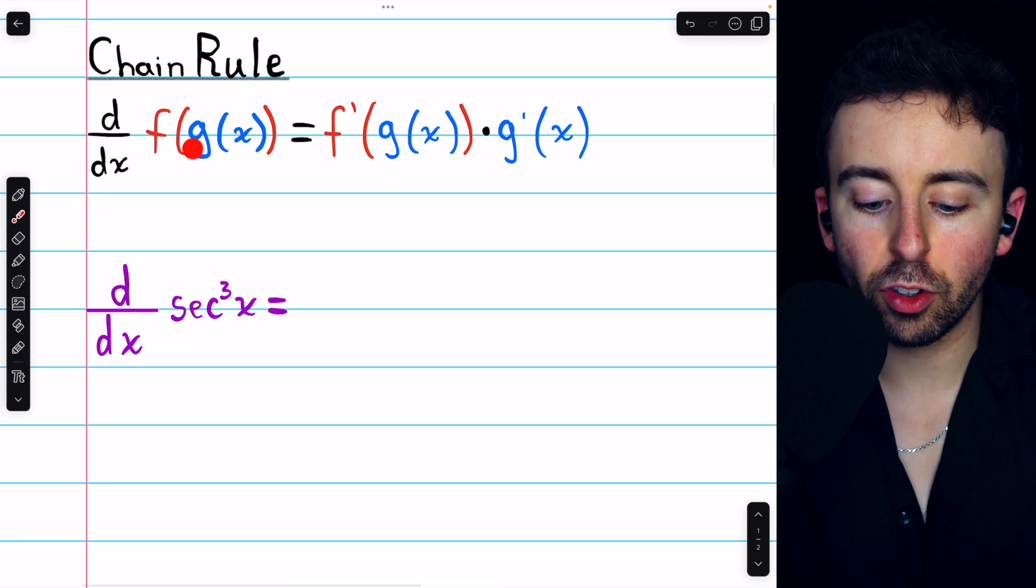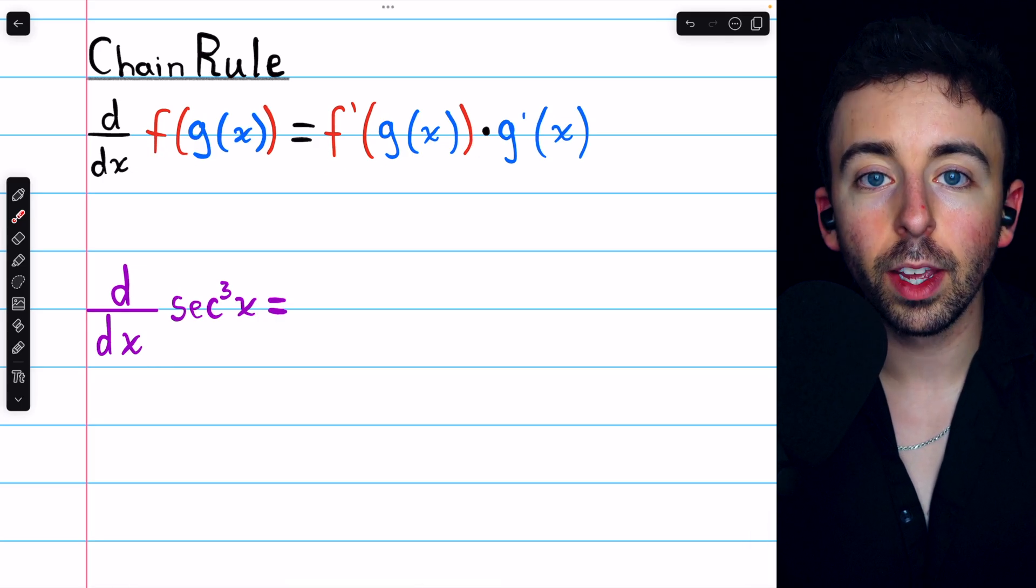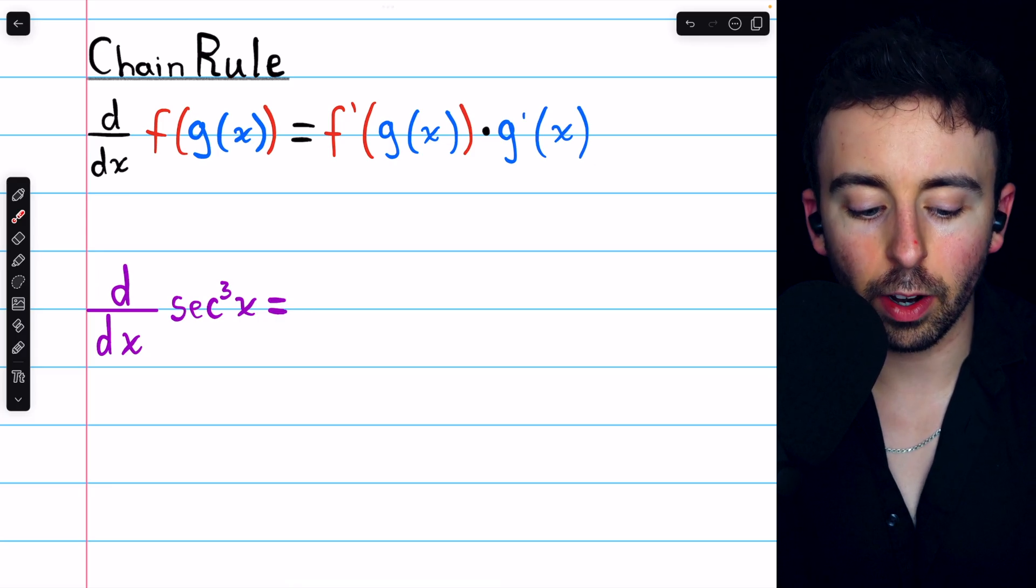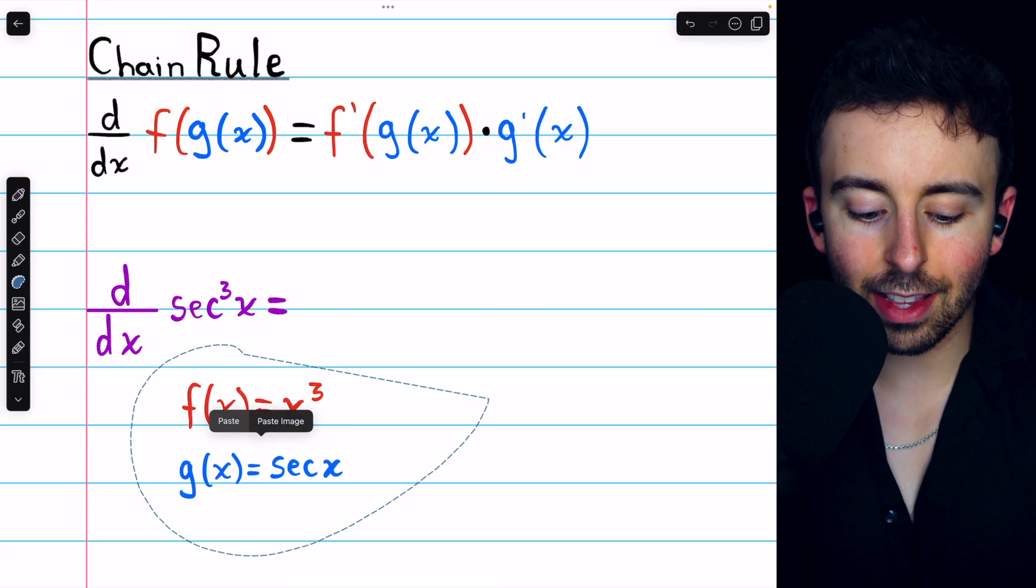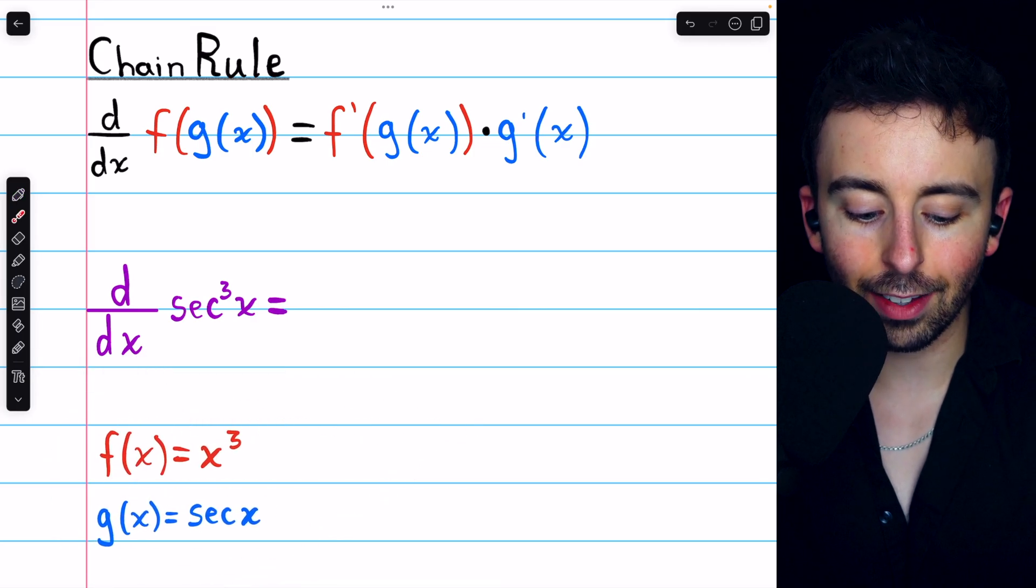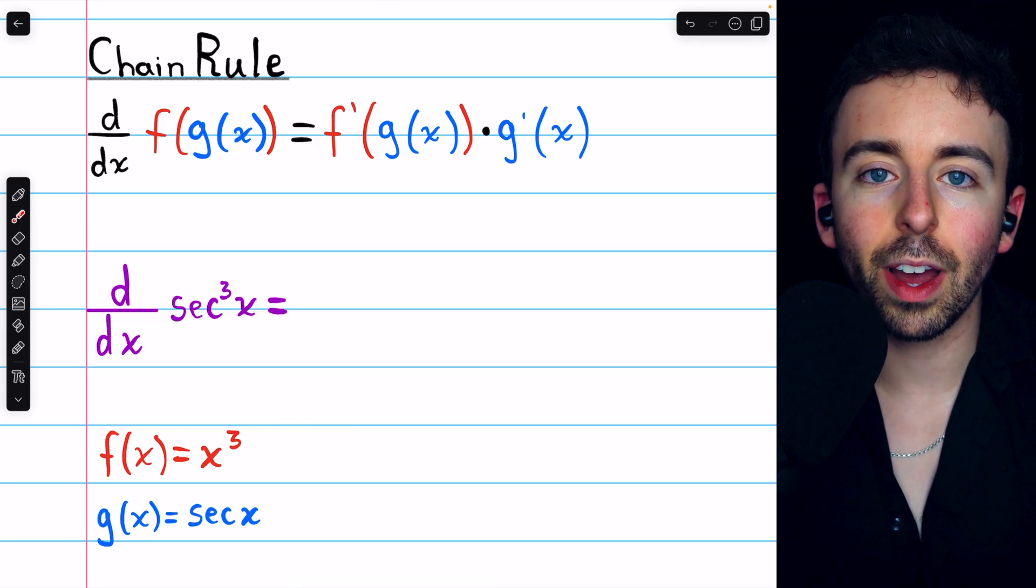The derivative of f of g is f prime of g times g prime. Now f is the outside function, which in our case is a thing cubed, and g is the inside function, which in our case is the secant function, so let's go ahead and apply the chain rule to find the derivative.